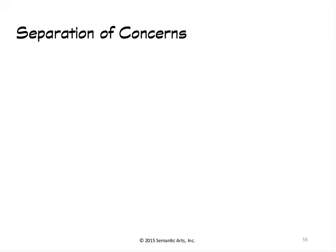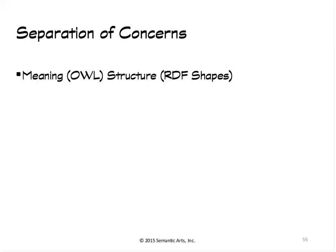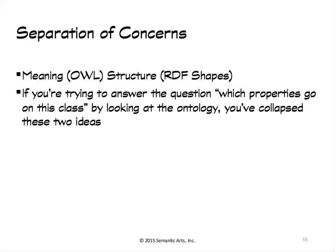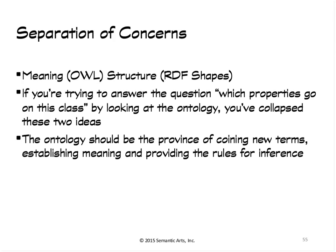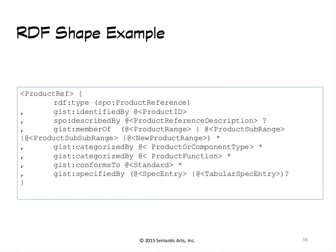Finally, OWL — the modeling language for describing classes and membership in classes and inference — is all about meaning. But people want it to be about structure as well, and it's not about structure. There's a new standard just coming along now called RDF Shapes that is about structure. So if you find yourself looking at an ontology and trying to answer which properties 'go on' this class, you've collapsed these two ideas together. The ontology and OWL modeling should be about coining new terms, saying what they mean, and rules for inference. Something like RDF Shapes should be handling cardinality constraints and which properties should really go on this class. We're pretty excited about it — it's going to really help that separation of concerns.